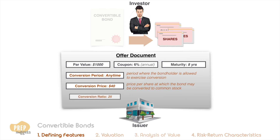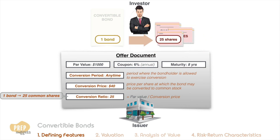Given the conversion price, we can work out the conversion ratio, which is the par value of the bond divided by the conversion price. For our example, the conversion ratio is 25, meaning that one bond can be converted to 25 common shares. Take special note of this ratio as we'll be needing it for the analysis later.